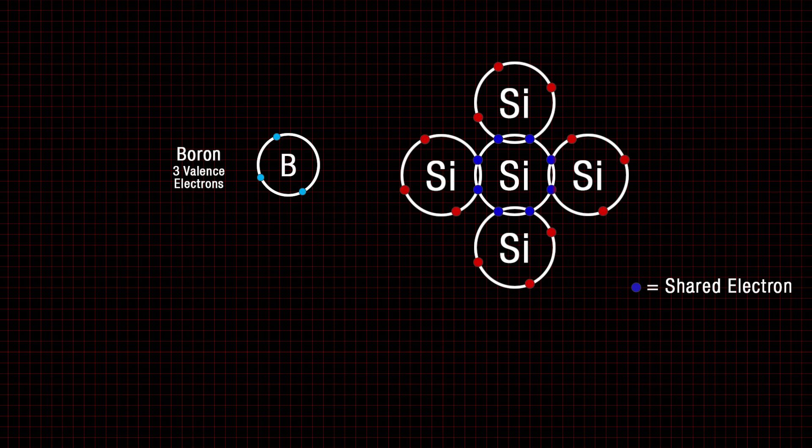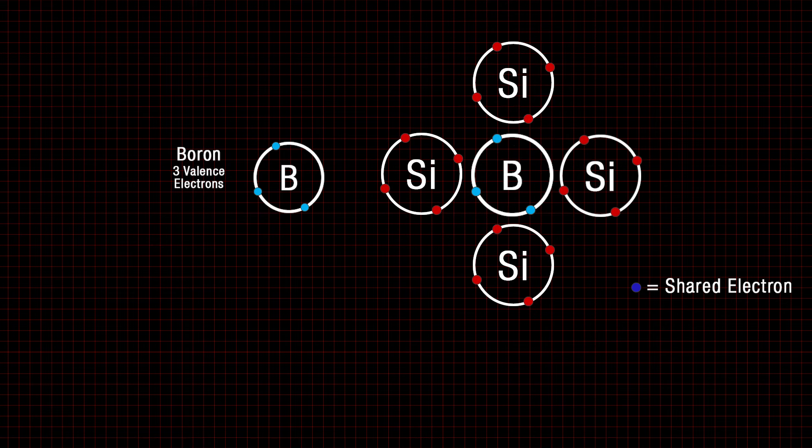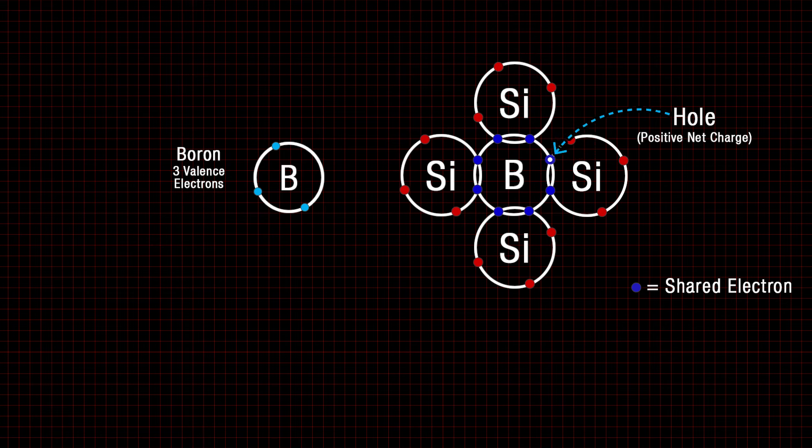For the anode, the region is doped with a material such as boron. Boron atoms have fewer than four valence electrons, resulting in valence holes, creating a p-type material.